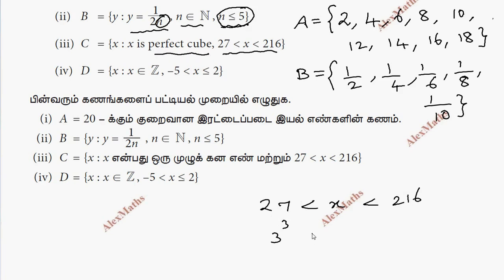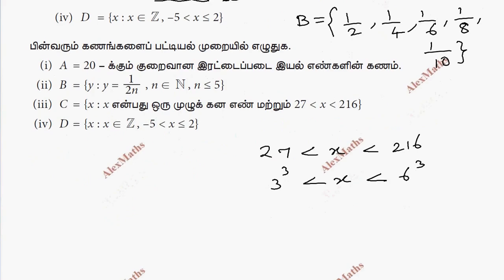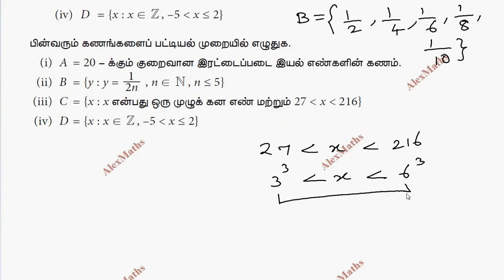So less than x less than 6 cube. Between 3 and 6 equals 4 cube and 5 cube. So 4 cube equals 64, 5 cube equals 125.